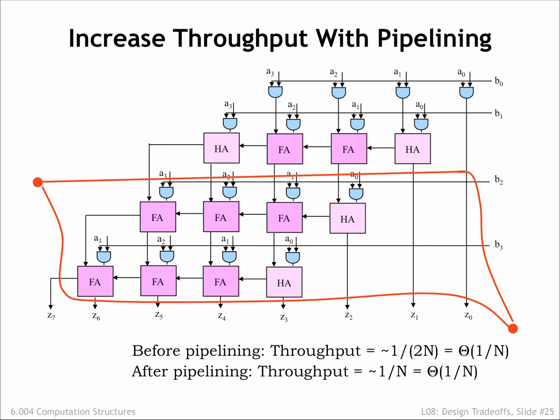Yet both the before and after throughputs are order 1 over N. Is there any hope of a dramatically better throughput?